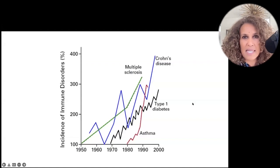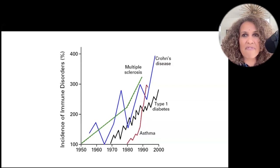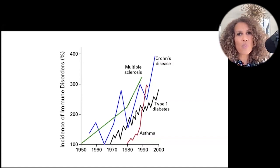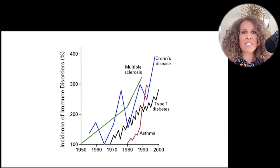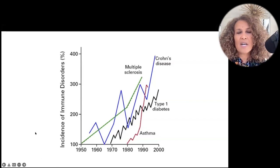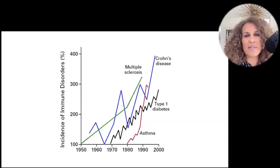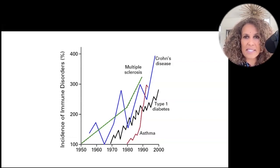This slide shows a simple line diagram of the last 70 years demonstrating a dramatic increase in autoimmune diseases — Crohn's disease, ulcerative colitis, inflammatory bowel disease, multiple sclerosis, type one diabetes, asthma. We have about 108 different autoimmune diseases now, and as you'll see from the slide, the incidence is increasing dramatically.